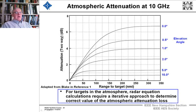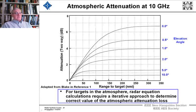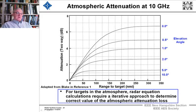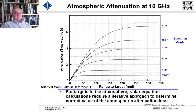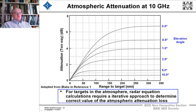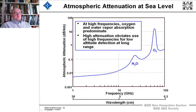So for targets with atmospheric, for targets in the atmosphere, the radar equations, as I said earlier, have to be calculated in an iterative approach so that you have the correct value of atmospheric loss. Now here at sea level is that atmospheric attenuation, and we see that water predominates, and then oxygen.